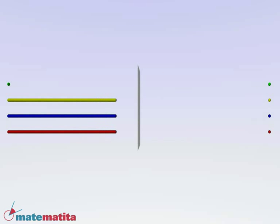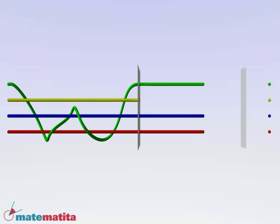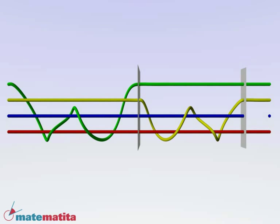Each pure braid can be decomposed into blocks in this way. In the first block all the strands but the last are straight. The green strand can link to the others. In the second block all the strands but the second to last are straight. The yellow strand can link only to the strands below. And so on until the last block in which the second strand can link to the first one.